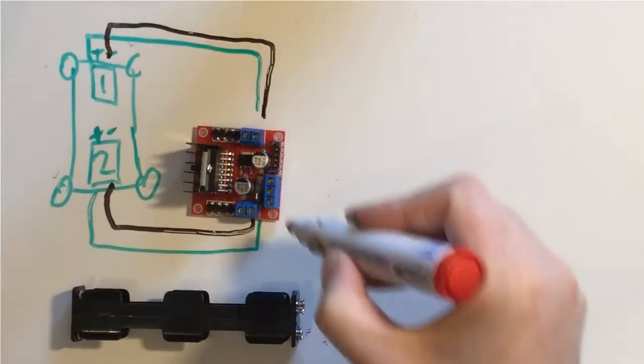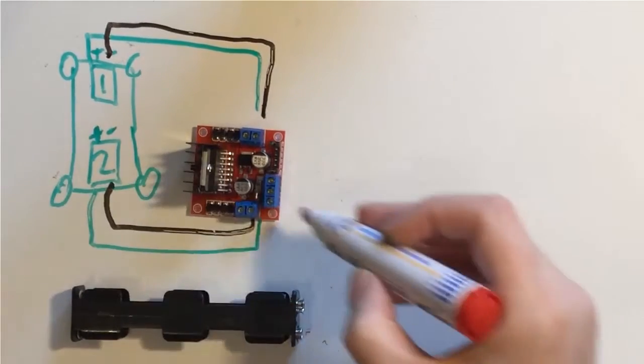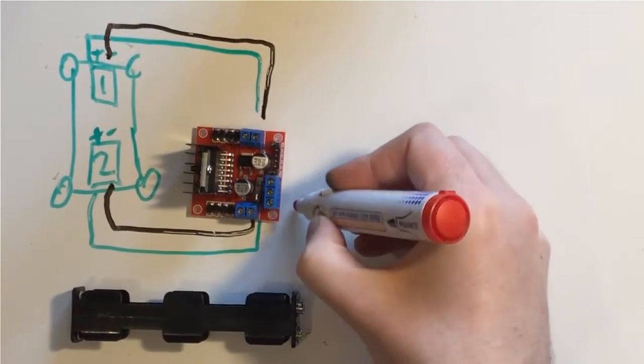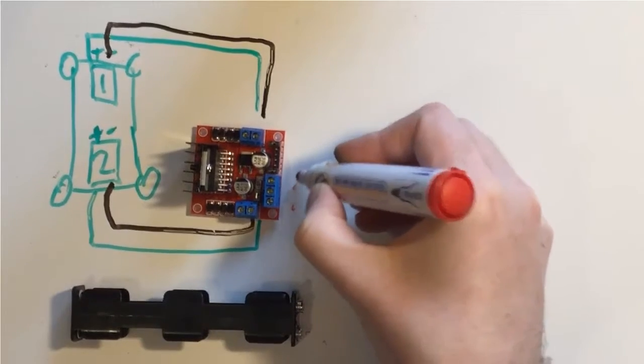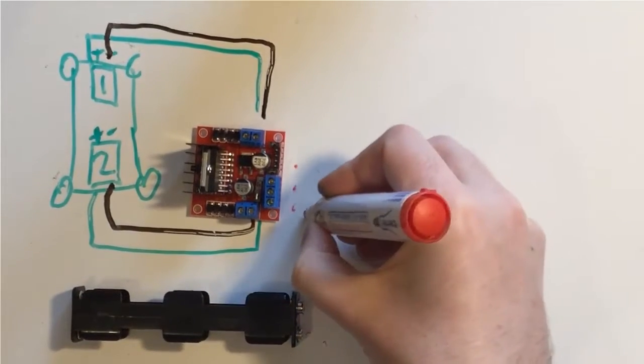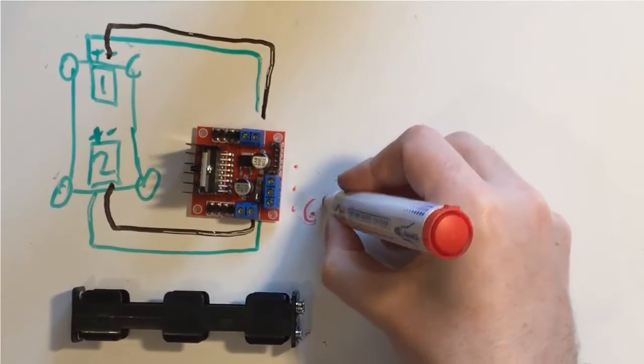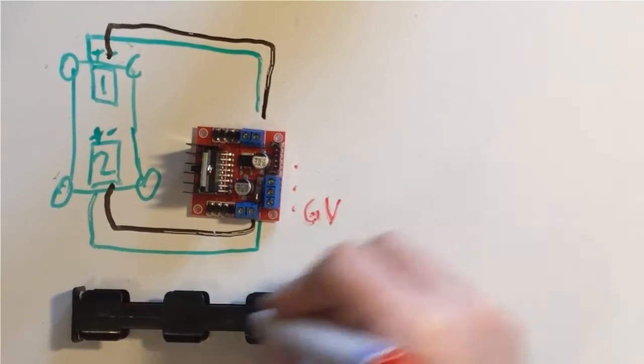There's three terminals here. The ones you need to know about for powering these motors are the bottom two. Dot, dot, dot to represent the three of them. The one down here, the very bottom one, I'm going to write in six volts because that's what's in here.